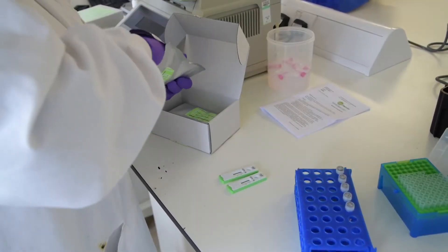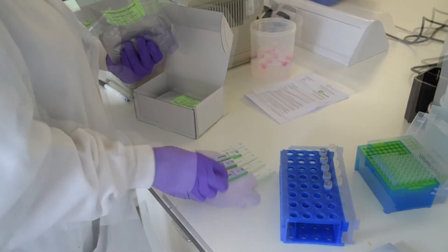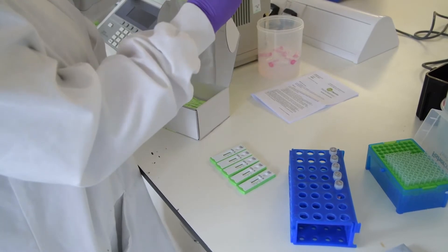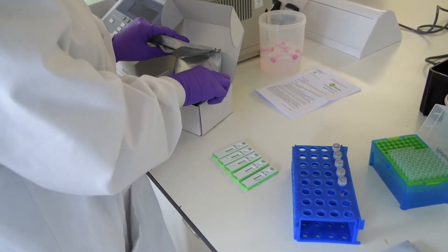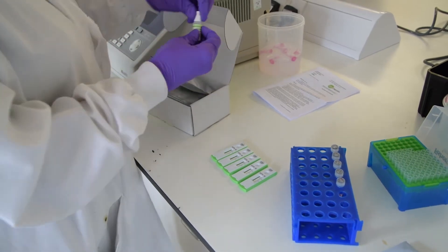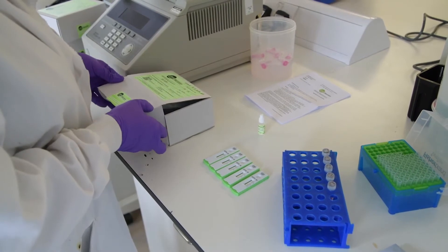First of all, take out the desired number of cassettes. Then carefully close the bag, making sure the desiccant packet is inside while pressing out as much air as possible. Close and store the bag at room temperature for up to two months and label new kits with the date of opening.